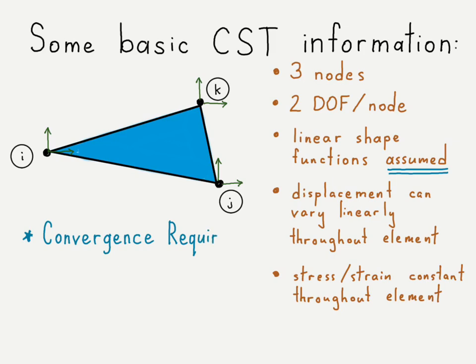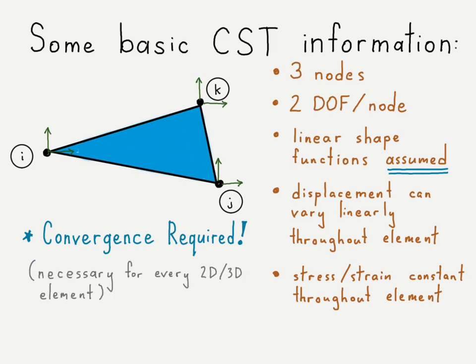One important thing to note is that convergence is required for these elements because the shape functions are assumed. This is not just true for the constant strain triangle element but for any 2D or 3D element.